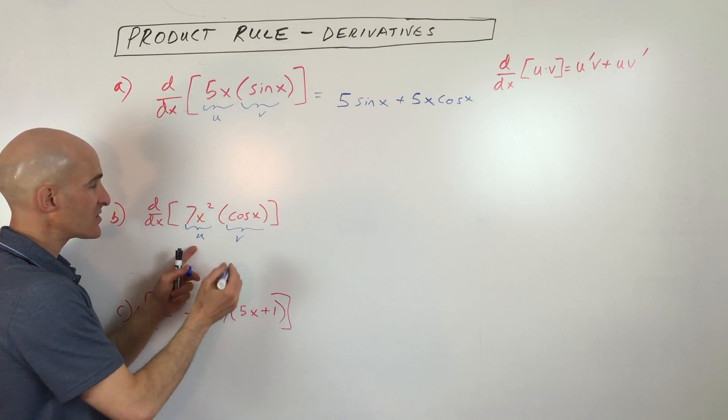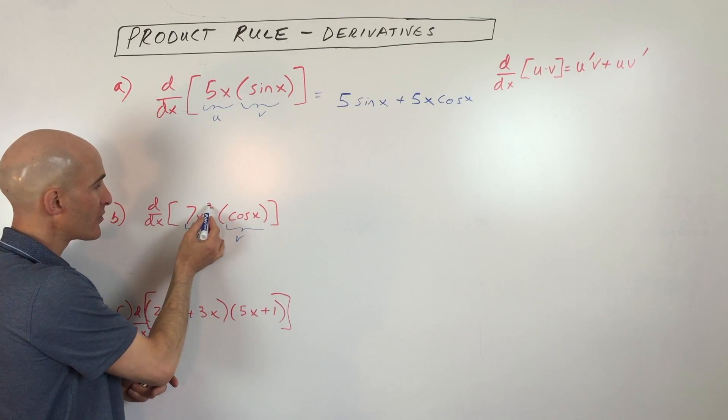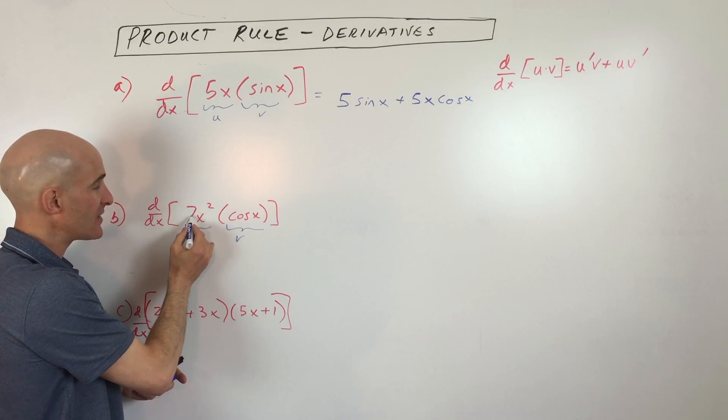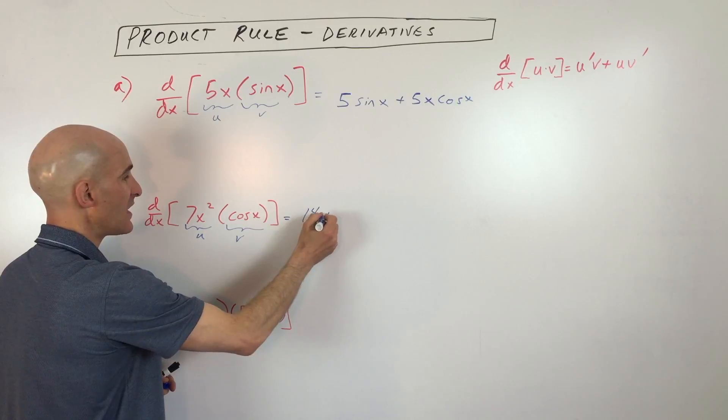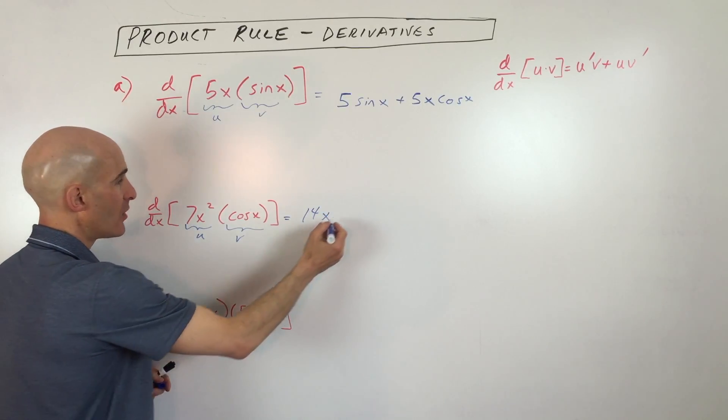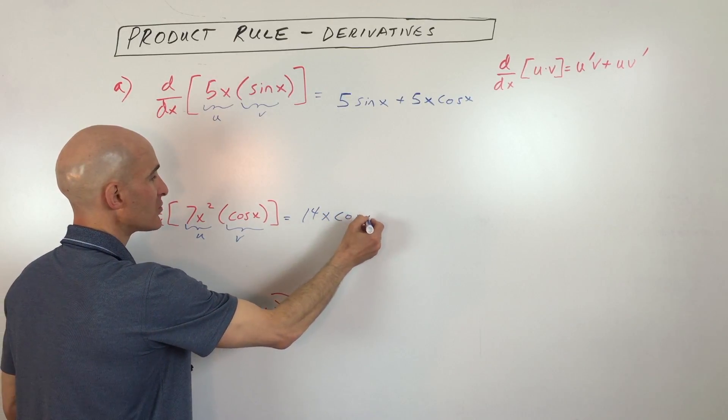So we're going to take the derivative of 7x squared. We're going to use our power rule. We're going to bring down the 2, multiply it by the 7, that's 14, and we're going to subtract 1 from the exponent. So that's going to be 14x to the first. We're going to leave the cosine alone, cosine x.